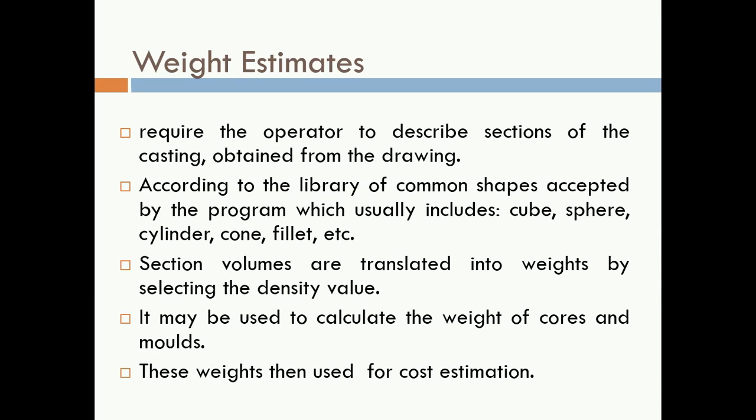Section volumes are translated into weight using the formula: weight = mass × g, and mass = volume × density. The metal — whether aluminium, cast iron, or steel — is known, and so is its standard density value. Volume is calculated using the shapes available in the program library, and multiplying volume by density gives mass.